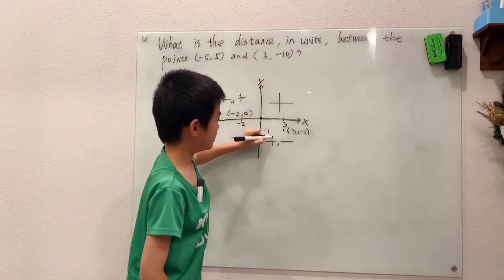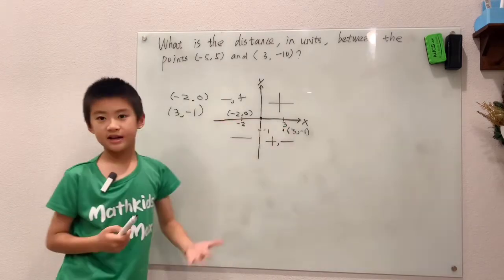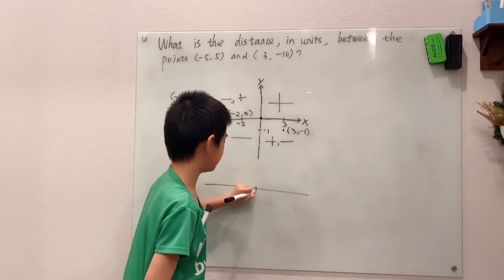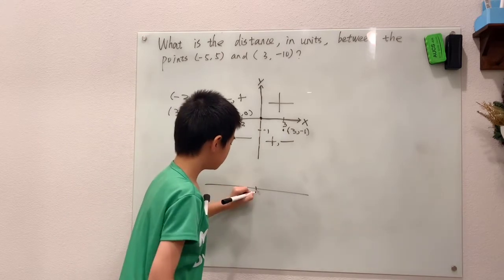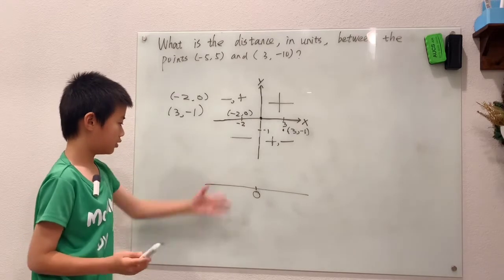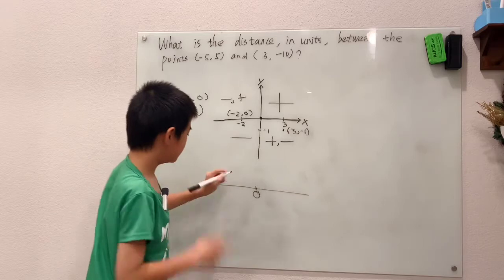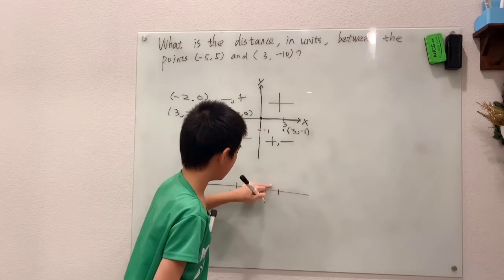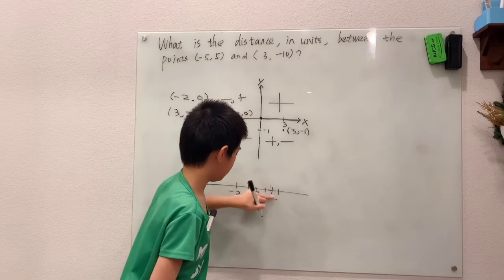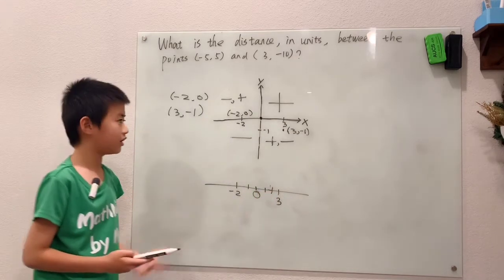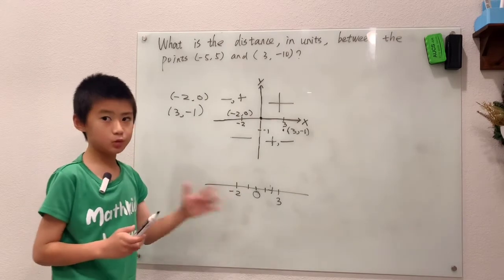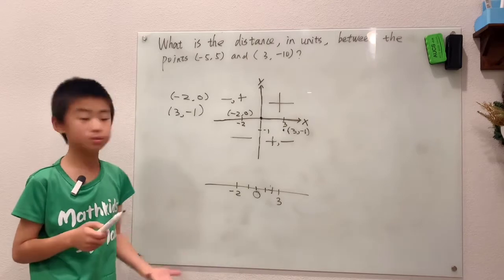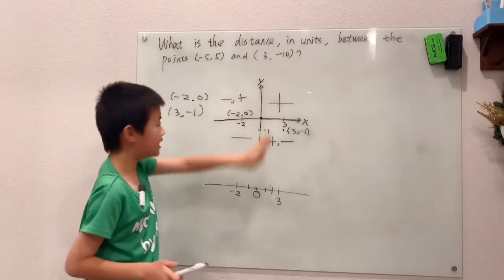You might have guessed that the x-axis is basically a number line. The origin is zero, both coordinates are zero. Negative means you're going left, so negative two is here, and positive means you're going right, so three is here. You might refer to this as a 1D coordinate plane — a number line is basically a 1D coordinate plane, and this is a 2D coordinate plane.